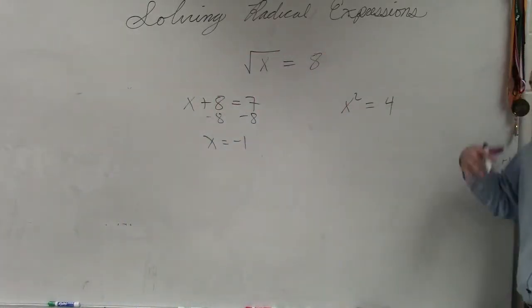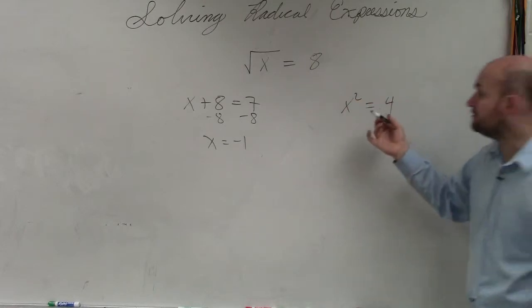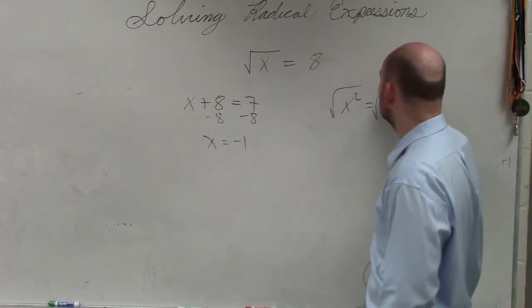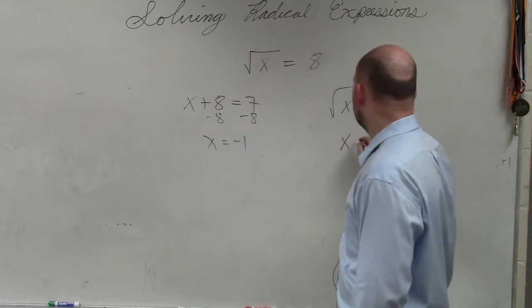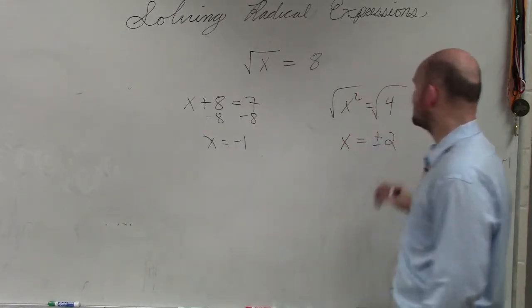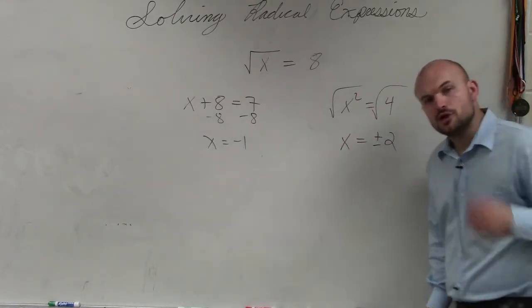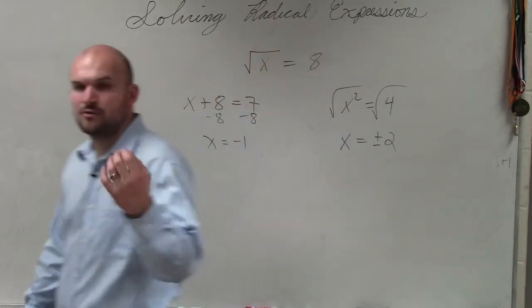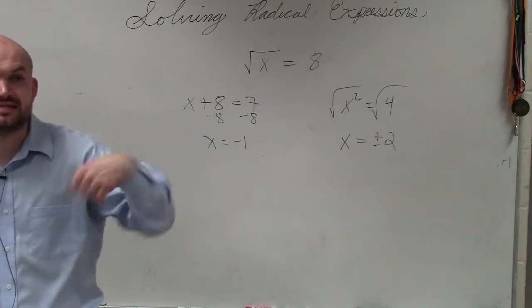Over here, if I had x squared, to undo the squaring function, we would square root both sides. So therefore, I have x equals plus or minus 2. So what I want you guys to understand is what we're basically doing is undoing what's happening to our variable.